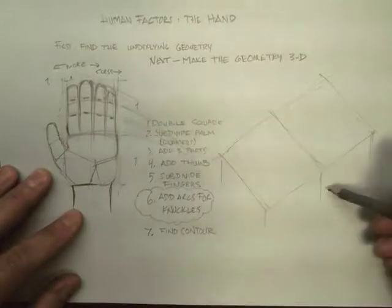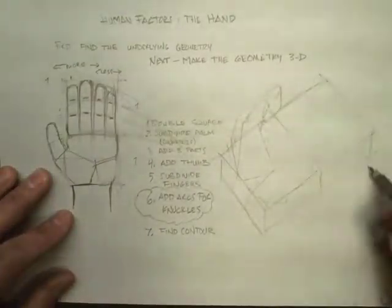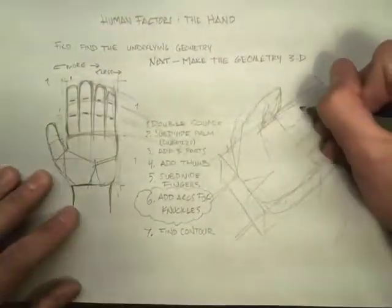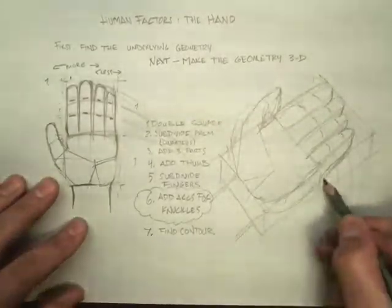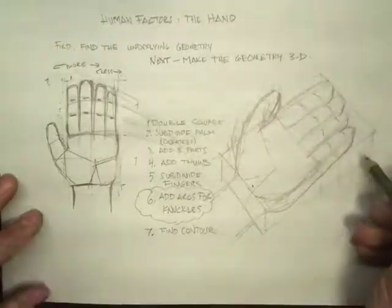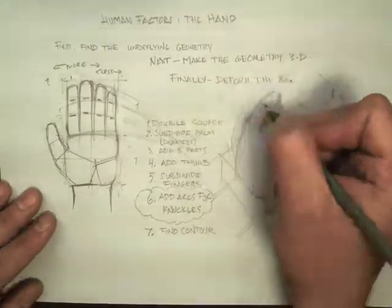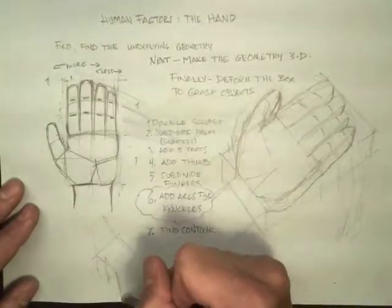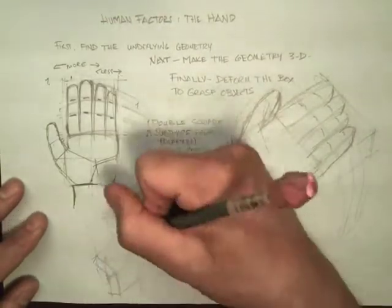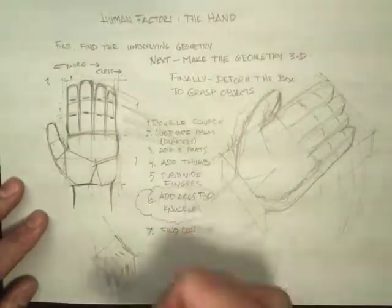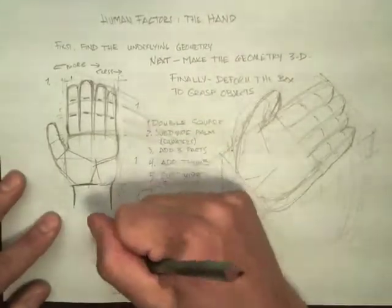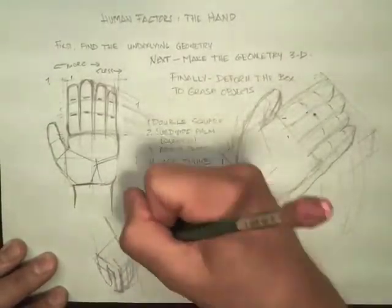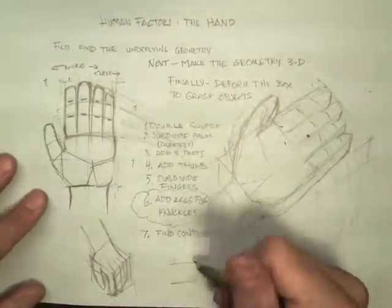Take that flat geometry and put it in a three-dimensional box. This doesn't mean our hand is going to look like a robot hand — we'll ease the edges as we go, but the underlying geometry remains the same. Let's take that three-dimensional box and use that as the basis for deforming the hand to fit the object that it is interacting with. You can see how the double square extruded in three dimensions is bent to make the shape. There's the double square box, and it gives us the arrangement of the hand in space.